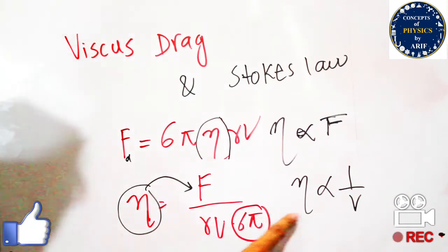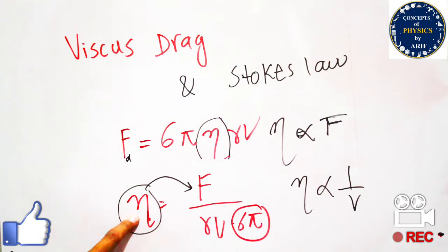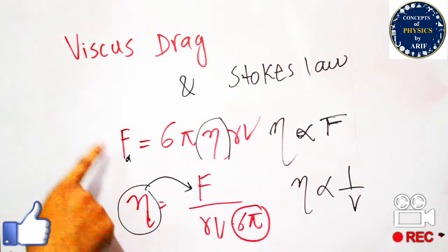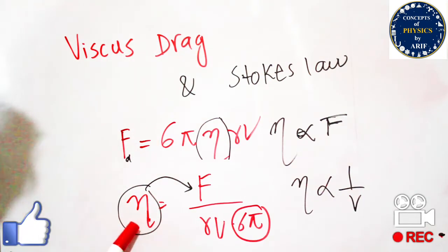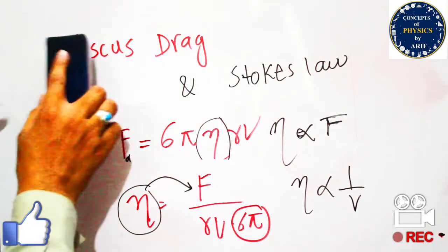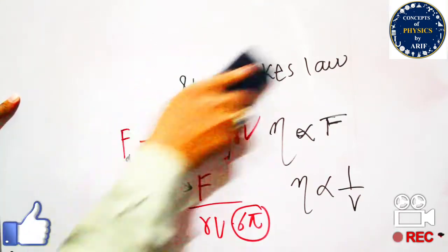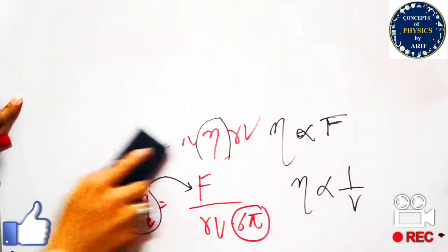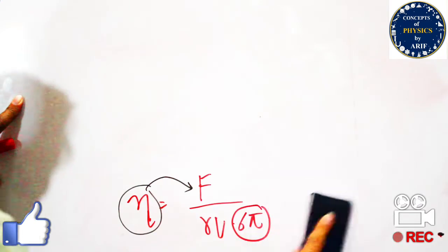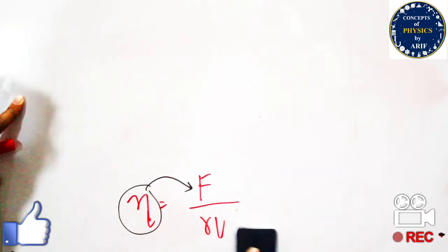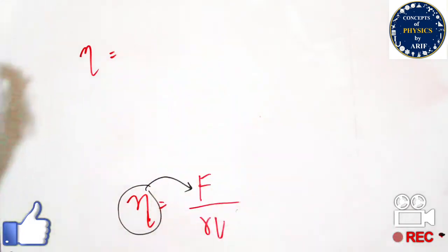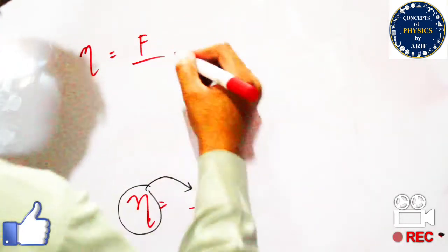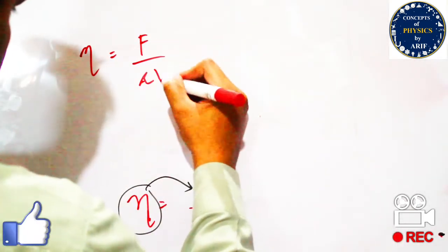We have now finished discussing the dependability of the coefficient of viscosity — viscous drag, viscosity, and Stokes' law. Now we will discuss the units and dimensions of the coefficient of viscosity, because most books do not mention them. The formula for coefficient of viscosity is equal to force divided by r and v.